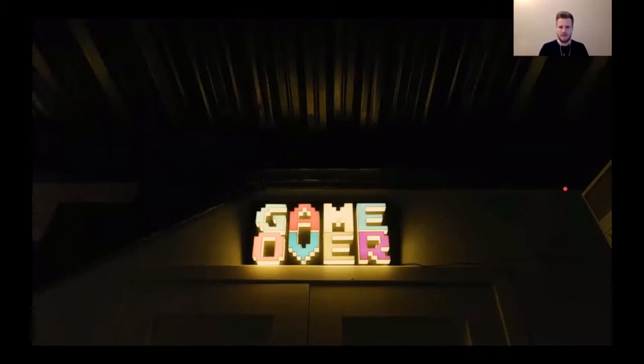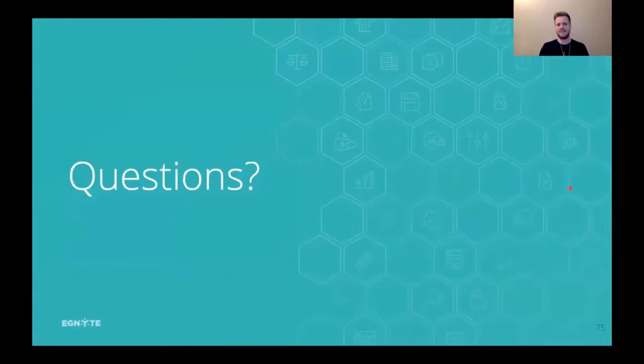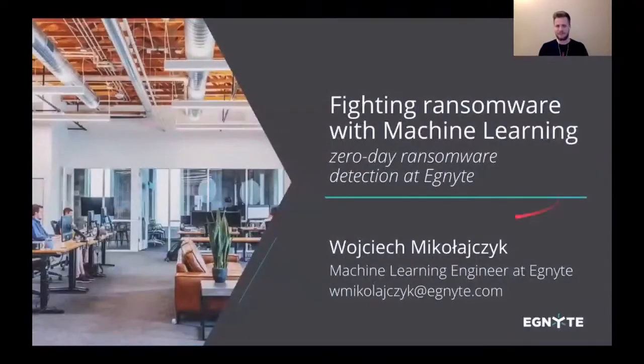So basically, this is game over for the ransomware at Ignite. Because we've built a system which can detect the ransomware, then we can block the user. And even if the ransomware made some damage, then we can revert the file for the user because we stored the previous version. So that's how we protect our users from the ransomware. Are there any questions? Thank you.